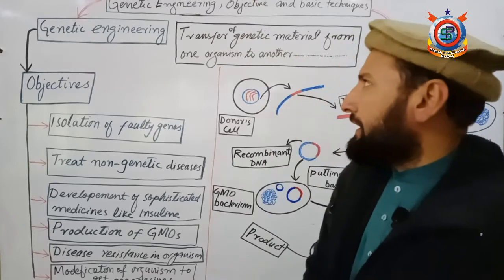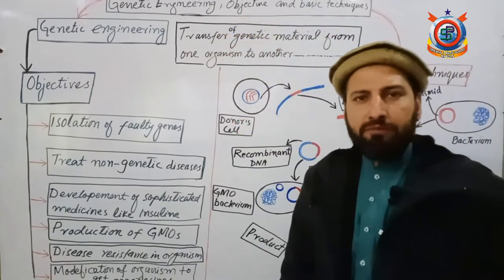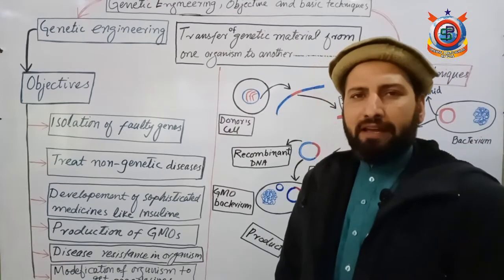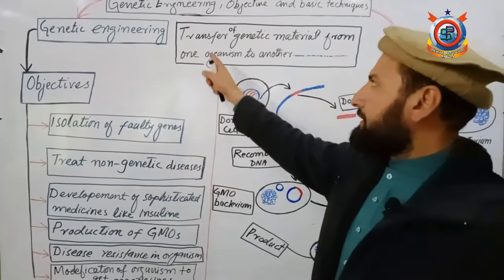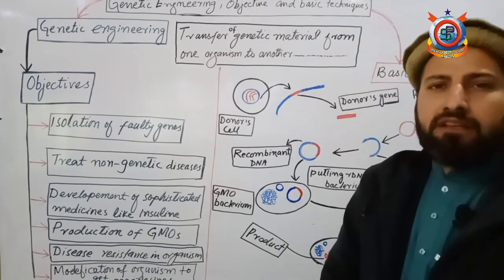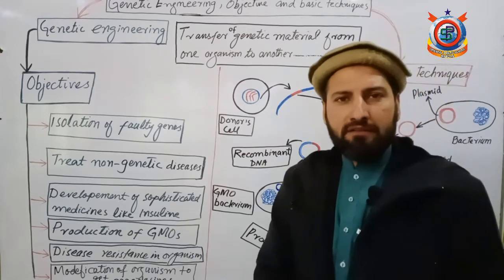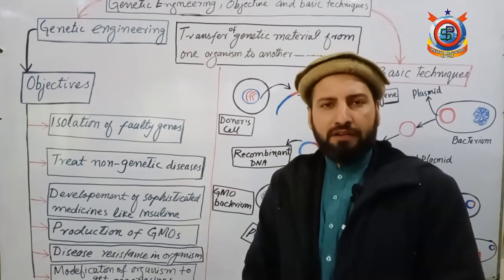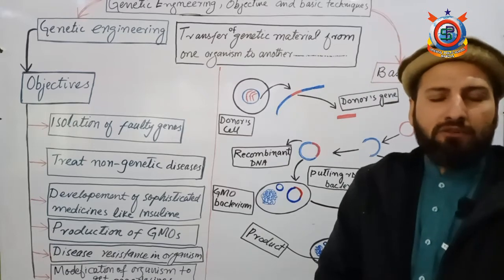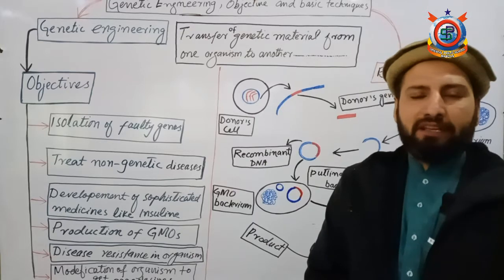Genetic engineering is a branch of biology — or more specifically, a sub-branch of biotechnology — in which we transfer genetic material from one organism to another. We modify organisms at the genetic level: we remove a gene from one organism and transfer it to another organism to produce traits of our own interest.